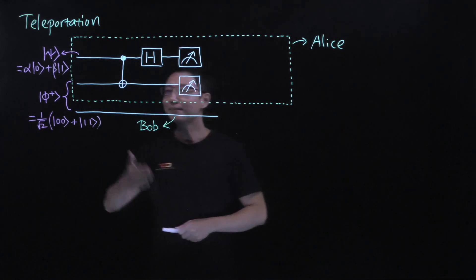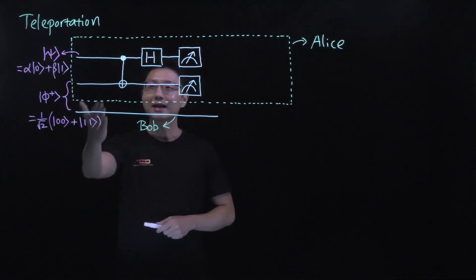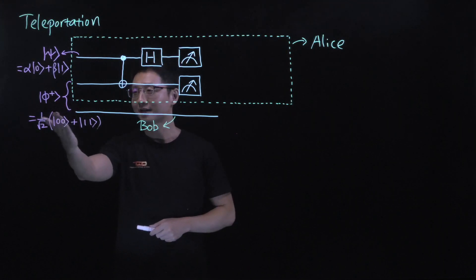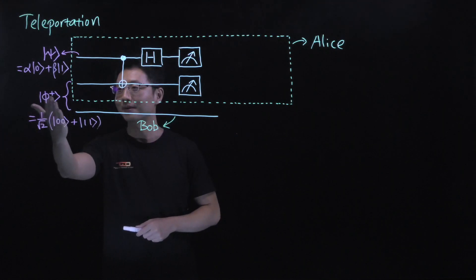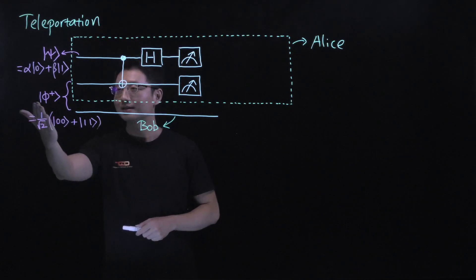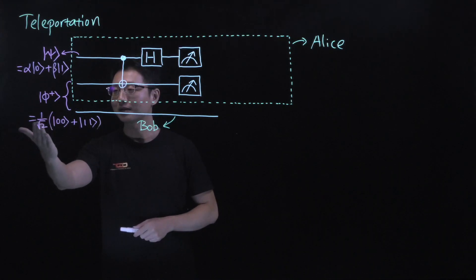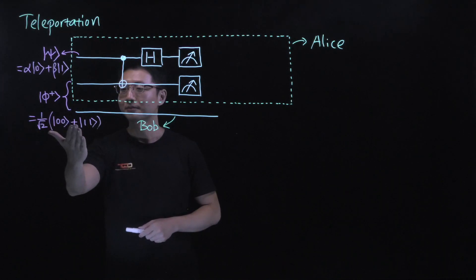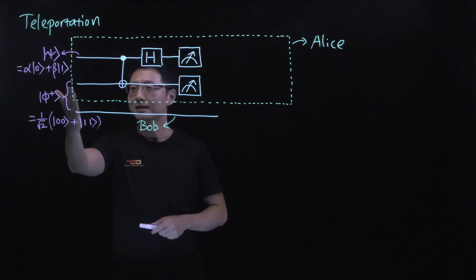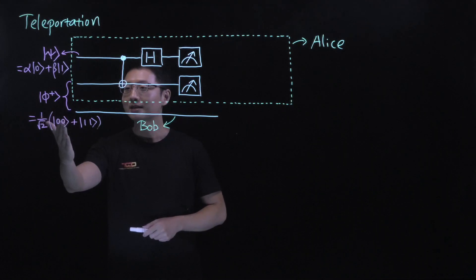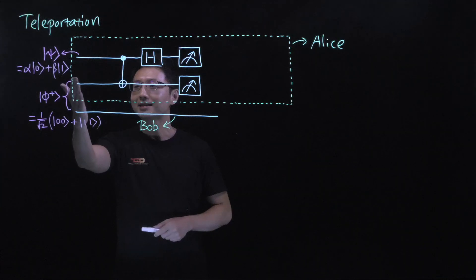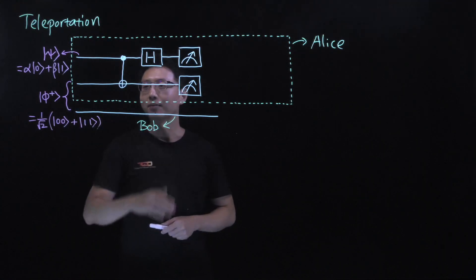Let me assume that Alice and Bob share an entangled state, for example the Phi-plus state, which is one of the Bell states. This state is 1 over square root of 2 times (|00⟩ + |11⟩). This is a two-qubit entangled state. One qubit is with Alice, and one qubit is with Bob.